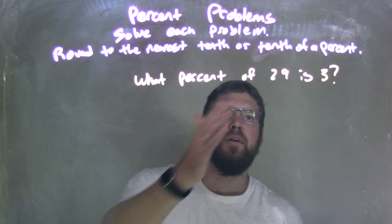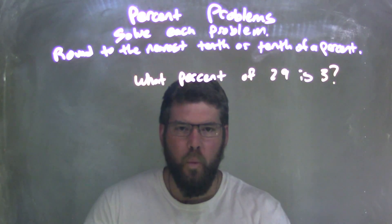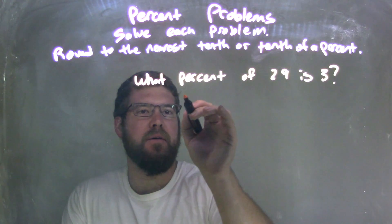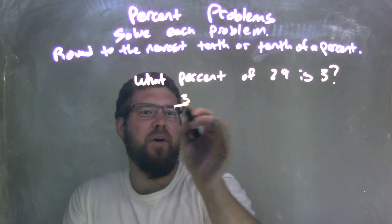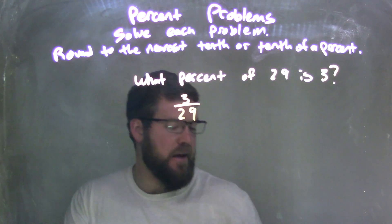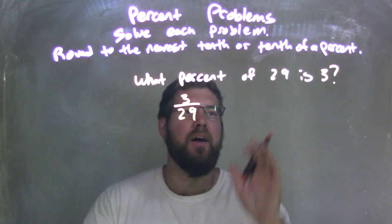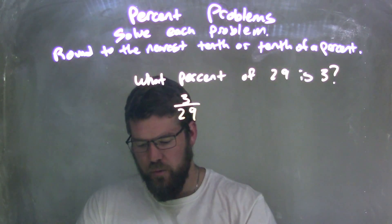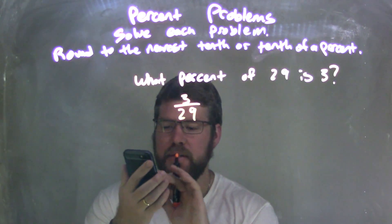What percent of 29 is 3? Well, what I need to do is take my number 3, the last part here, divide it by 29 to get a decimal. So 3 divided by 29,